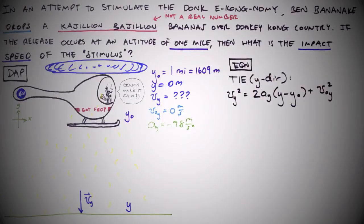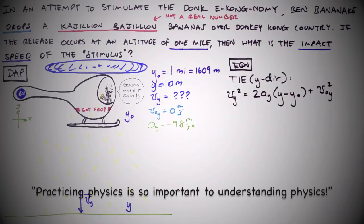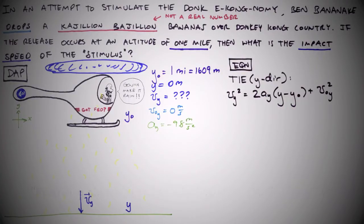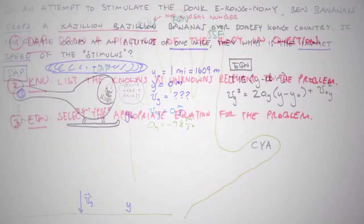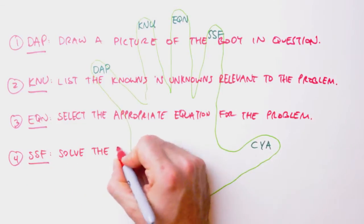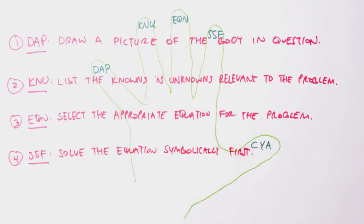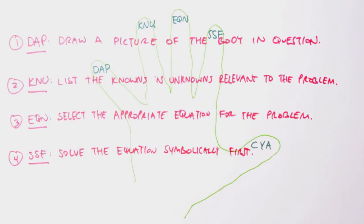This really only comes with practice, which is why practicing physics is so important to understanding physics. Of course, if a problem really has you flummoxed, a last-ditch attempt at equation selection can be made with trial and error.